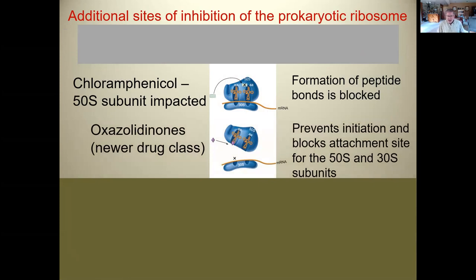Oxazolidinones prevent the 50S and 30S subunits from attaching to one another early in the translation process. Represented by a purple diamond shape, you can see how they prevent these two subunits from locking in place — which must happen before you can begin to translate the messenger RNA and bring in amino acids to link together to make the polypeptide.